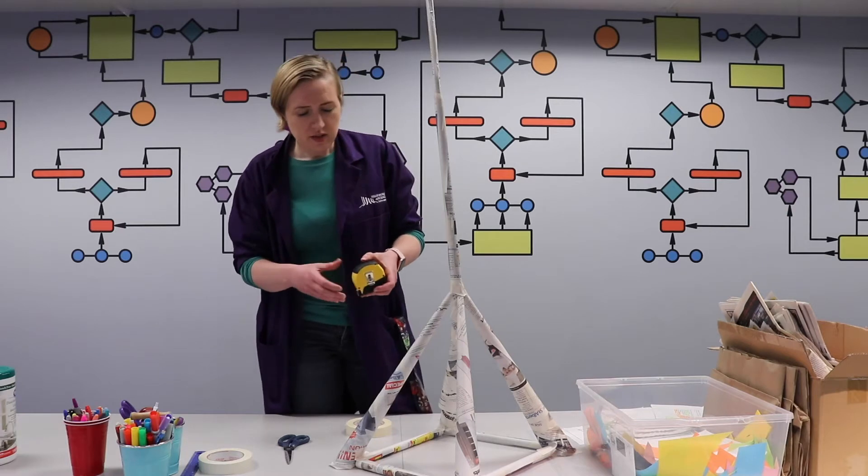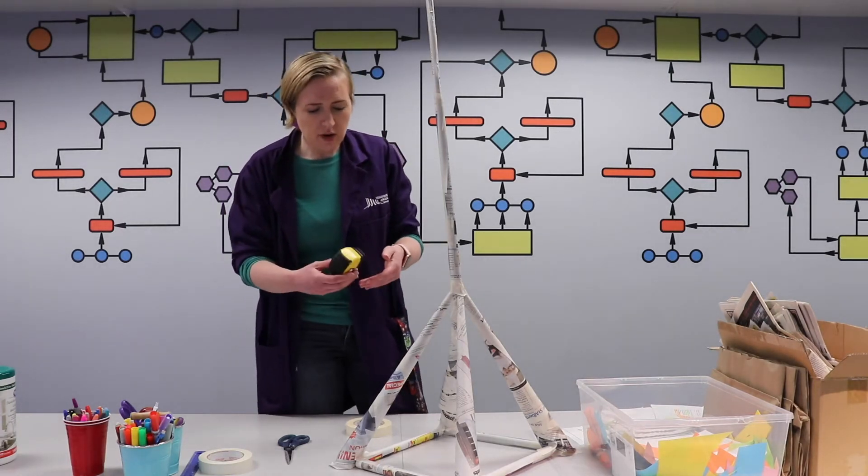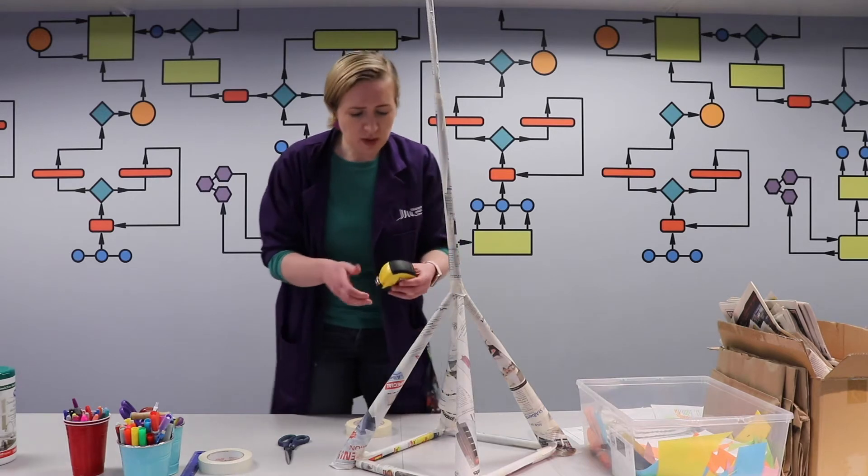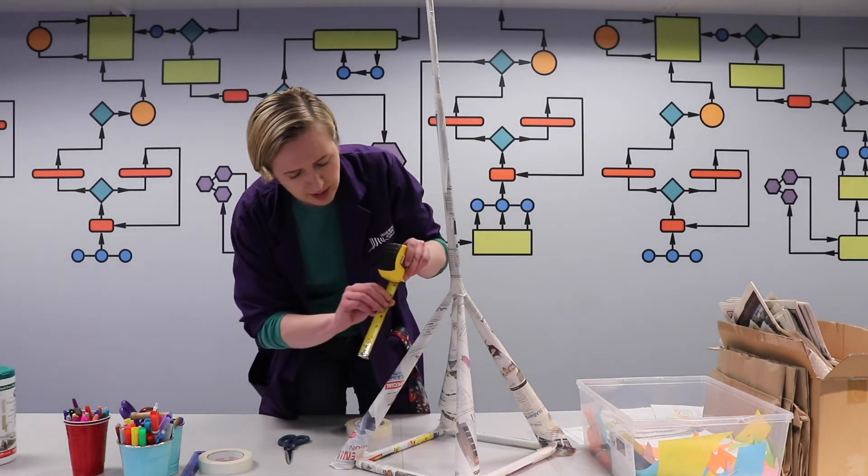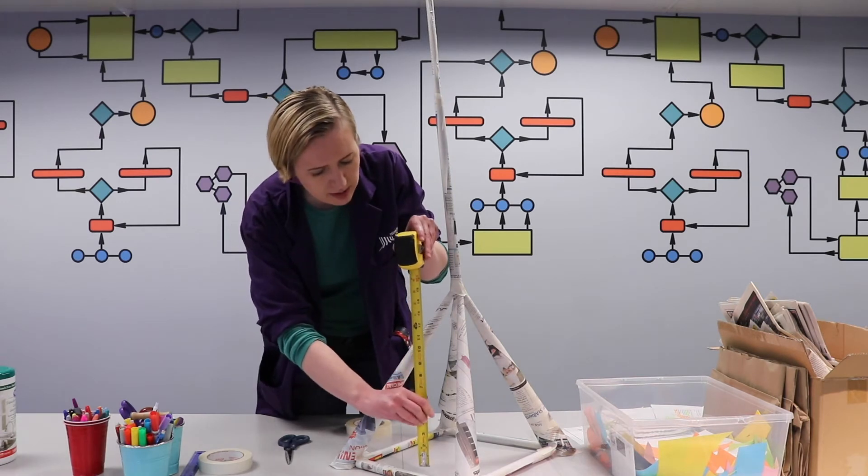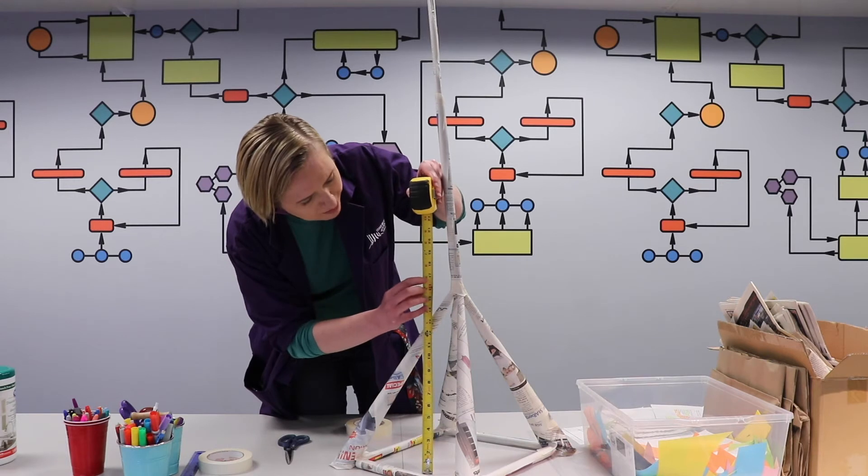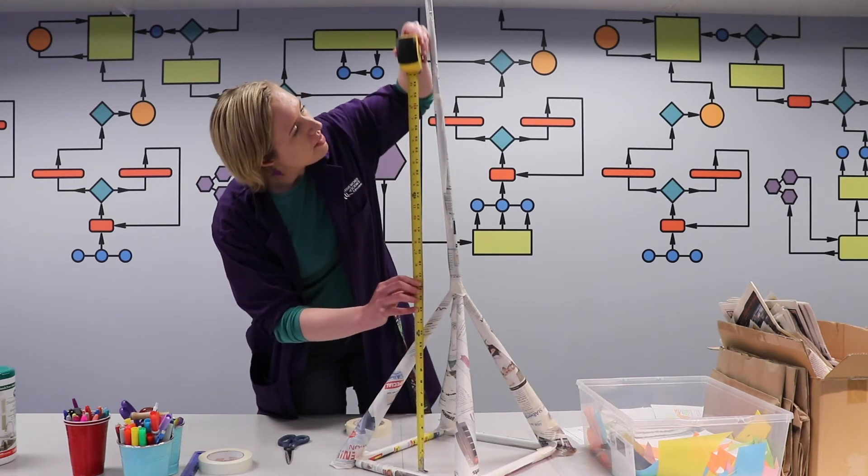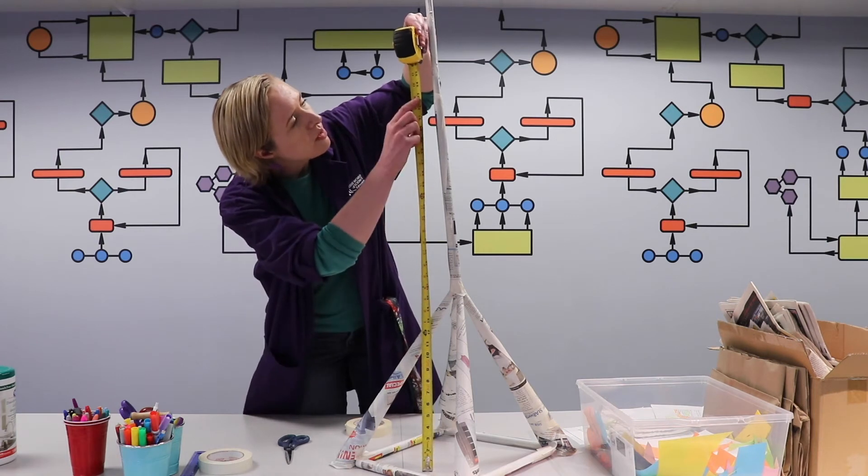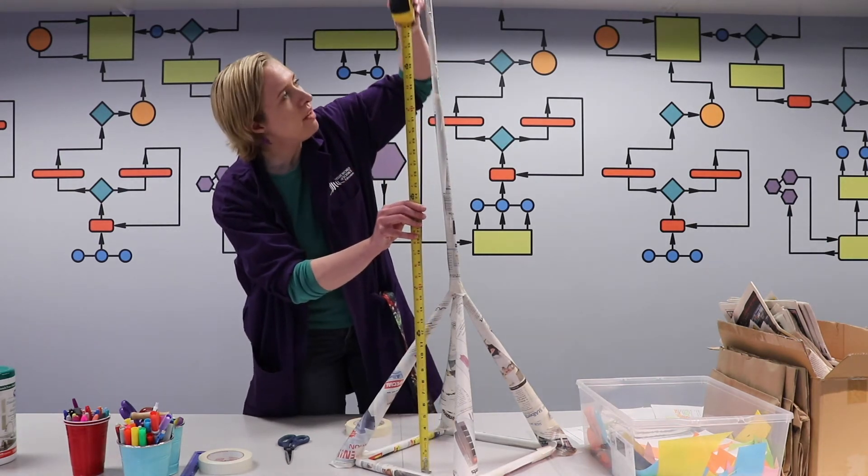All right, so now that we have the most recent version of our tower, let's go ahead and use the measuring tape again. We're going to start it on the table. Remember the first tower went to about 17 inches. Then we added another segment, so it made it up to about 33 inches.